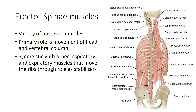The erector spinae muscles are a variety of posterior muscles whose primary role is movement of the head and the vertebral column. However, these muscles can also stabilize the posterior thoracic cavity and pull from the vertebrae onto the ribs in the opposite direction from things like the levator costarum, providing another stabilizer for the posterior part of the body and helping hold the ribs in place for the action of other muscles.